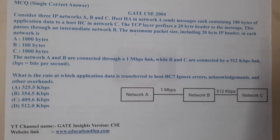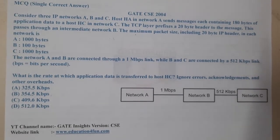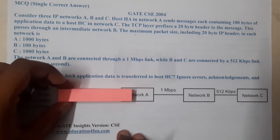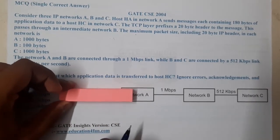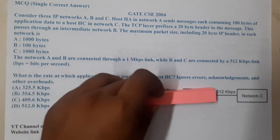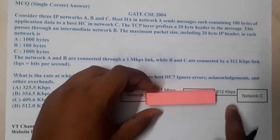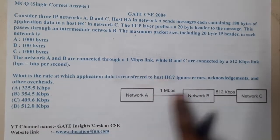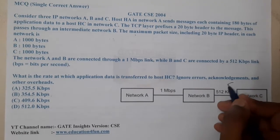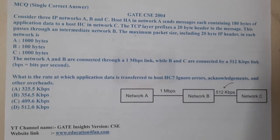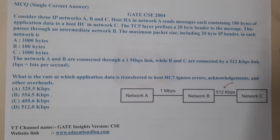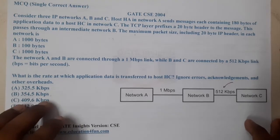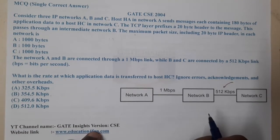For these types of problems, we look at the network with the minimum speed. Initially data goes at 1 Mbps and travels fast, but then it needs to slow down at the bottleneck link. That is why whenever solving these problems, always take the minimum value as the speed.